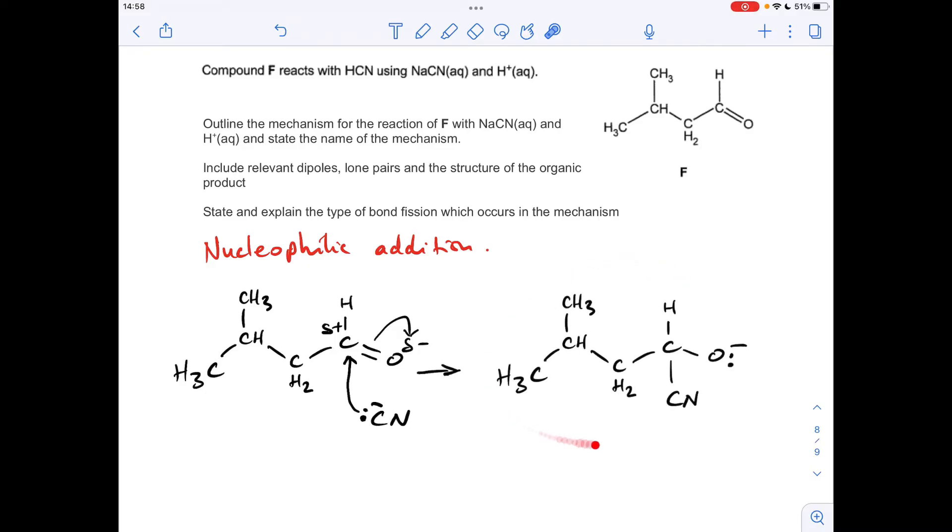So the upshot of that is it generates this intermediate ion here, remember it's reacting with HCN, there are H plus ions, so we put one into the next part of the mechanism, and we basically bond the O via the lone pair with that H plus ion, and that's going to generate a hydroxyl group here.